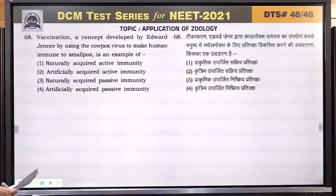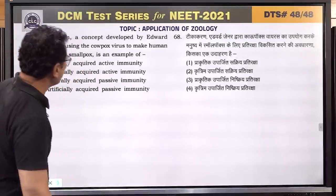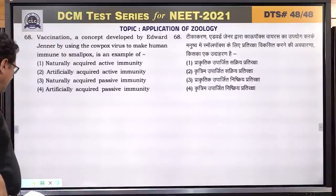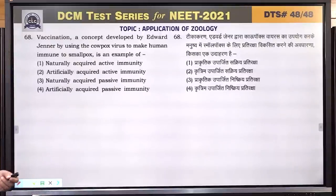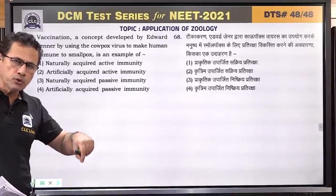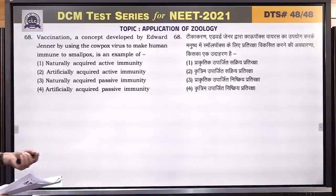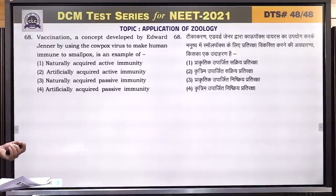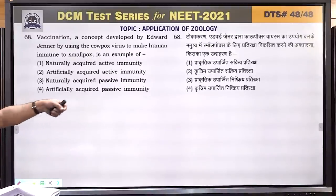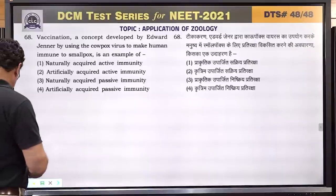Question number 68: vaccination, a concept developed by Edward Jenner using cowpox virus to make humans immune to smallpox, is an example of artificially acquired active immunity. The virus was transferred into the body and the body itself made antibodies — this is active immunity, acquired artificially through vaccination. Answer is 2.